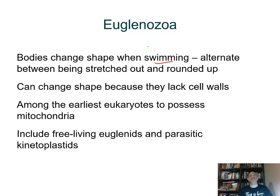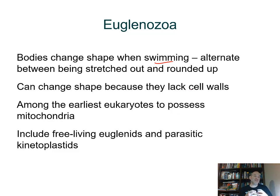They lack a cell wall but do have a special covering around them that is very flexible — a protein extracellular matrix. These are among some of the earliest eukaryotes to possess mitochondria. This group includes free-living euglenins and the parasitic kinetoplastids.